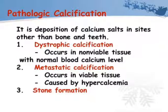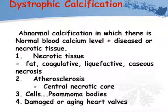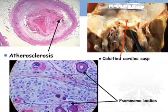Pathologic calcification is the deposition of calcium salts in sites other than bone and teeth. Dystrophic calcification occurs in non-viable tissue with normal blood calcium levels. Metastatic calcification occurs in viable tissue caused by hypercalcemia, and may also cause stone formation. Dystrophic calcification involves diseased or necrotic tissue, which may be fat, coagulated, liquefied, or caseous necrosis, as well as atherosclerosis and central necrotic cells. It may also cause psammoma bodies, and is seen in damaged aging heart cells.